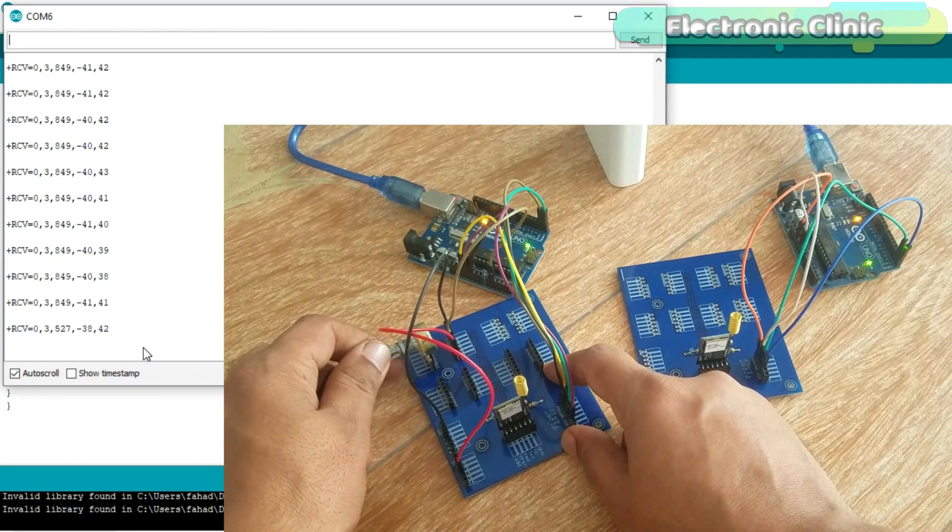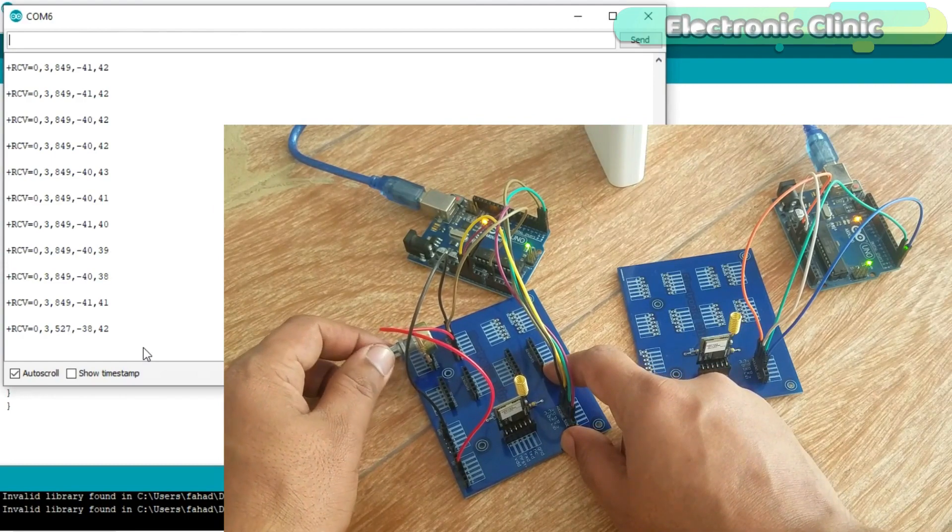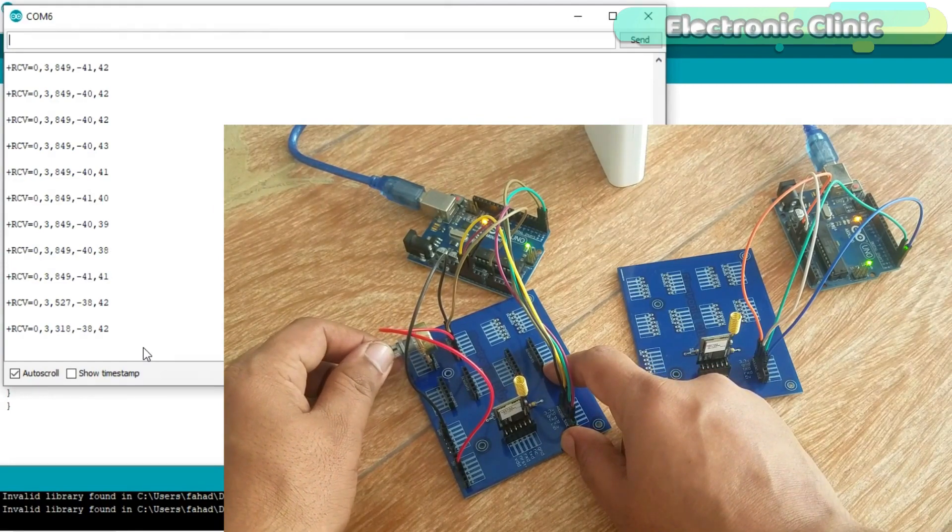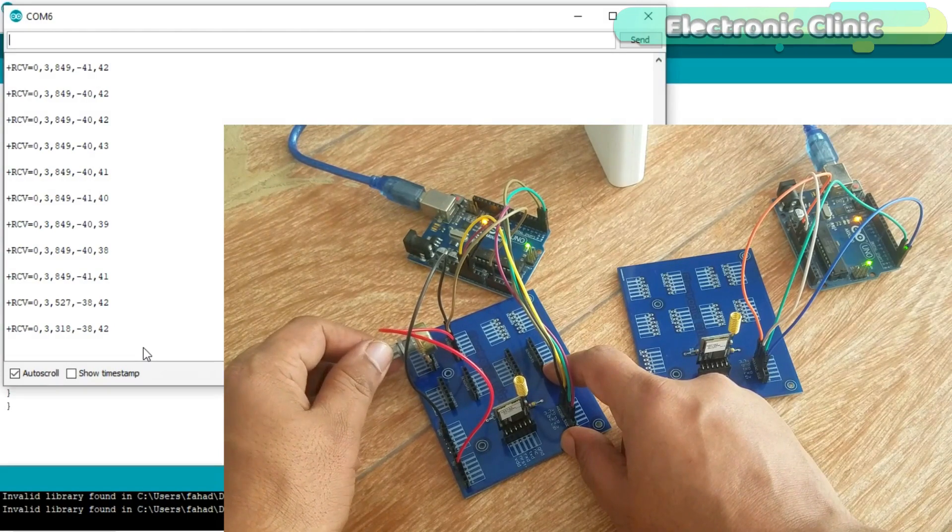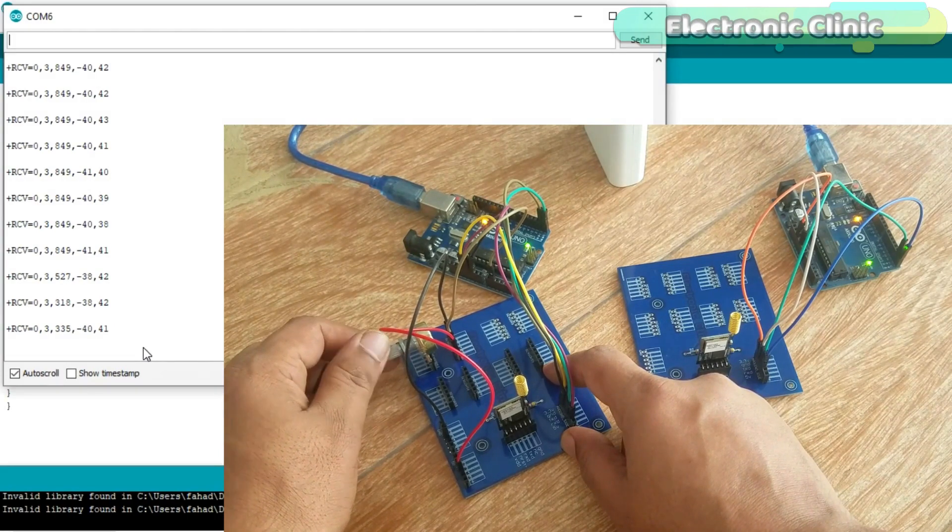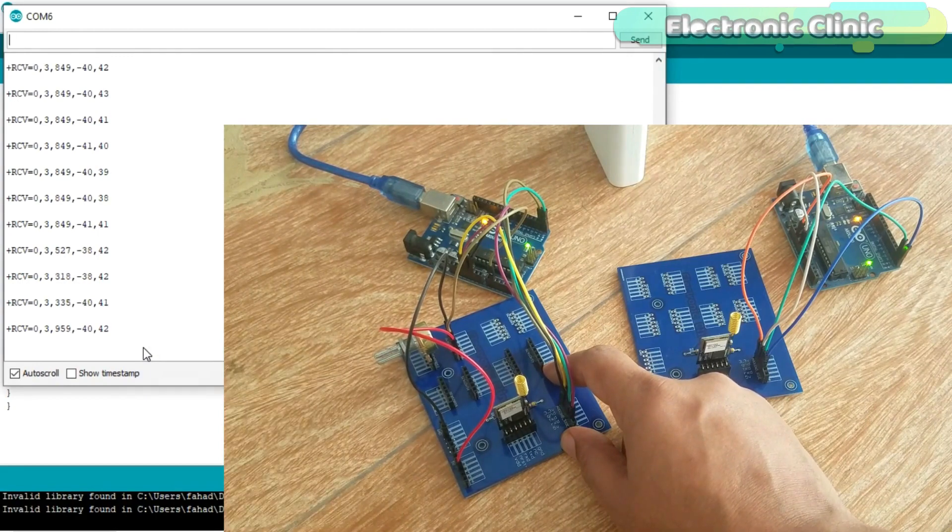With the help of this project you can monitor any sensor within 15 kilometer range. For the best understanding I'll be using a variable resistor as the sensor which of course you can replace with any other sensor you want.